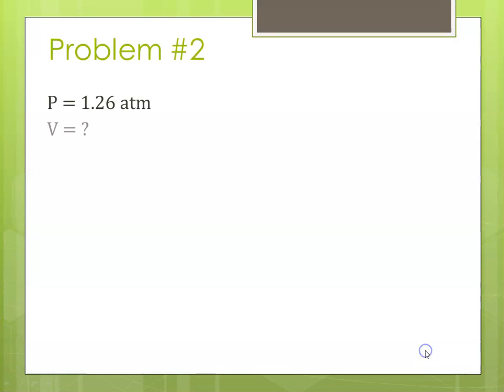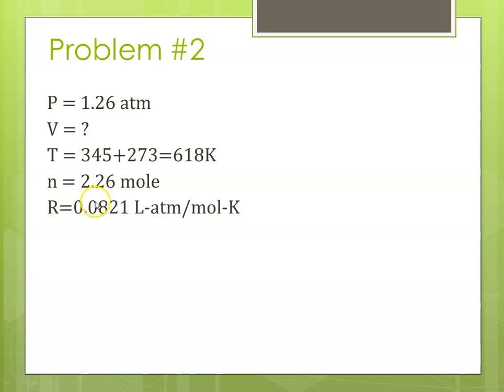So now we can identify our variables. I've got our pressure is 1.26. My volume is what I'm solving for. My temperature is the 345 degrees C plus 273 to get to my Kelvin temperature. N is 2.26 moles, and R is our 0.0821 liter atmospheres per mole Kelvin.